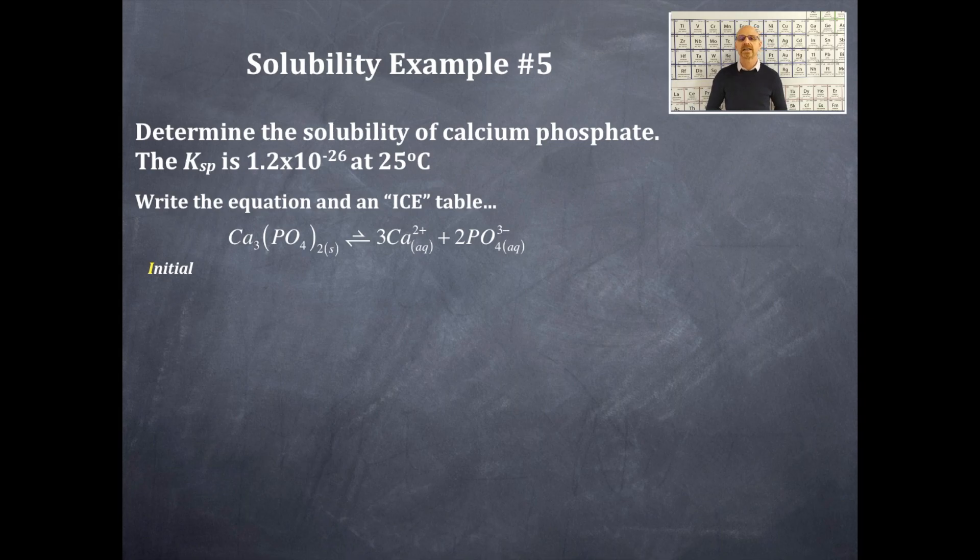We're going to do an ICE table for this, so that's initial, change, and equilibrium. Do I need to incorporate anything for a value for the solid, the calcium phosphate? No. Do I have anything on the product side initially? That's zero for the calcium ion, zero for the phosphate ion, just like any other equilibrium reaction. It's going to be shifting to the right. Since this is shifting to the right I'm going to have something on the product side eventually, but initially it's zero.